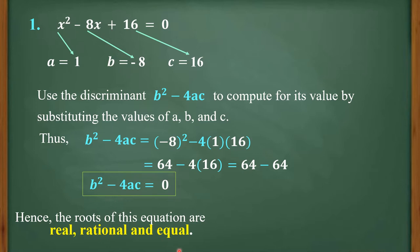In general, when we apply the discriminant b squared minus 4ac and it equals zero, we can say that the roots are real, rational, and equal.